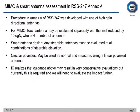Guidance was also provided on MIMO and smart antenna assessment in RSS 247 Annex A. RSS 247 covers 2.4 GHz and 5 GHz wireless LAN devices, Bluetooth, and Bluetooth Low Energy. For MIMO, they outlined that each antenna may be evaluated separately with the limit reduced by 10 log N, where N is the number of antennas. For smart antenna design, any steerable antennas must be evaluated at all combinations of steerable elevations. For circular polarity, measurements can be made using a linear polarized antenna. Industry Canada recognizes this may result in a very conservative set of evaluations but currently this is required.